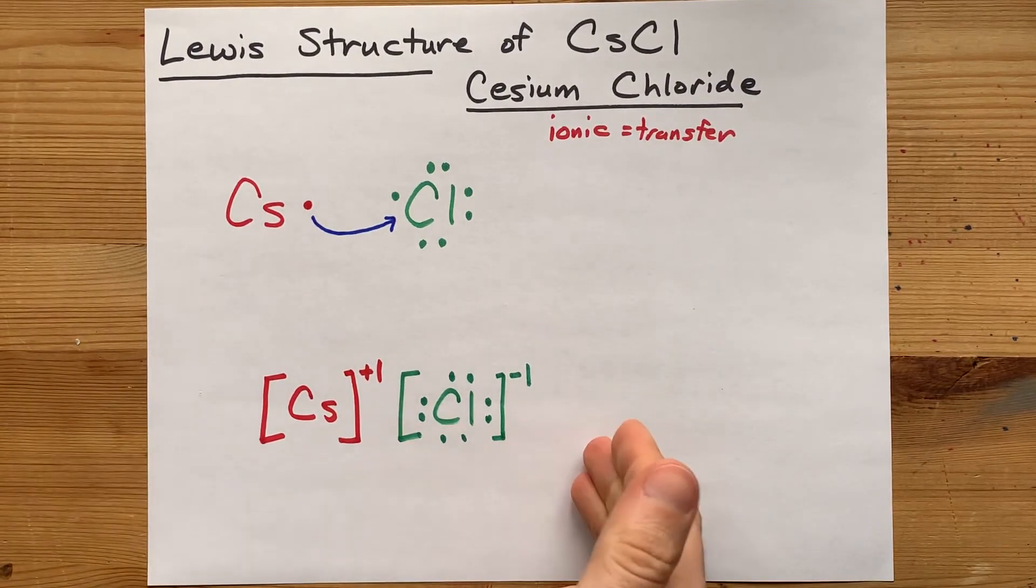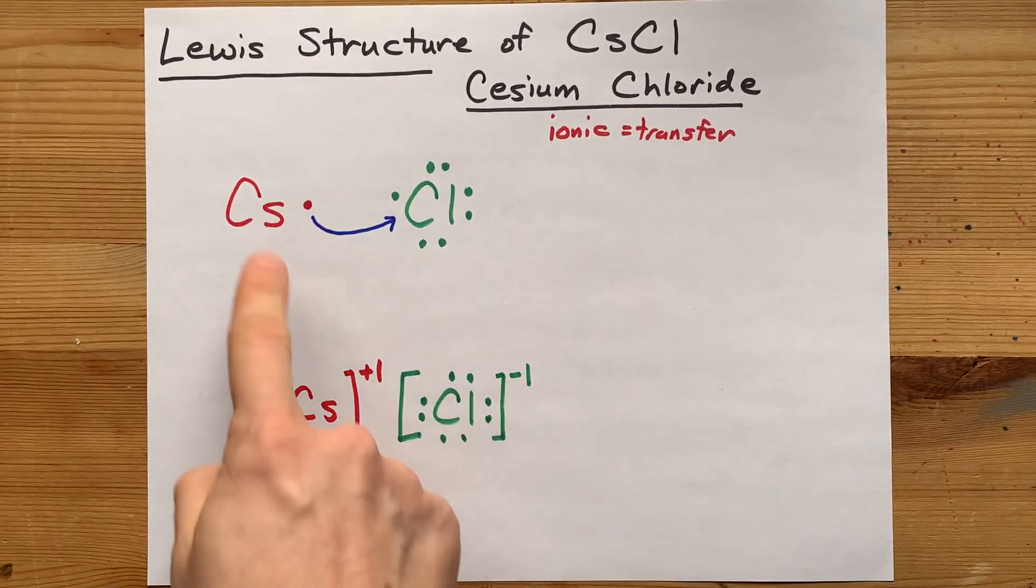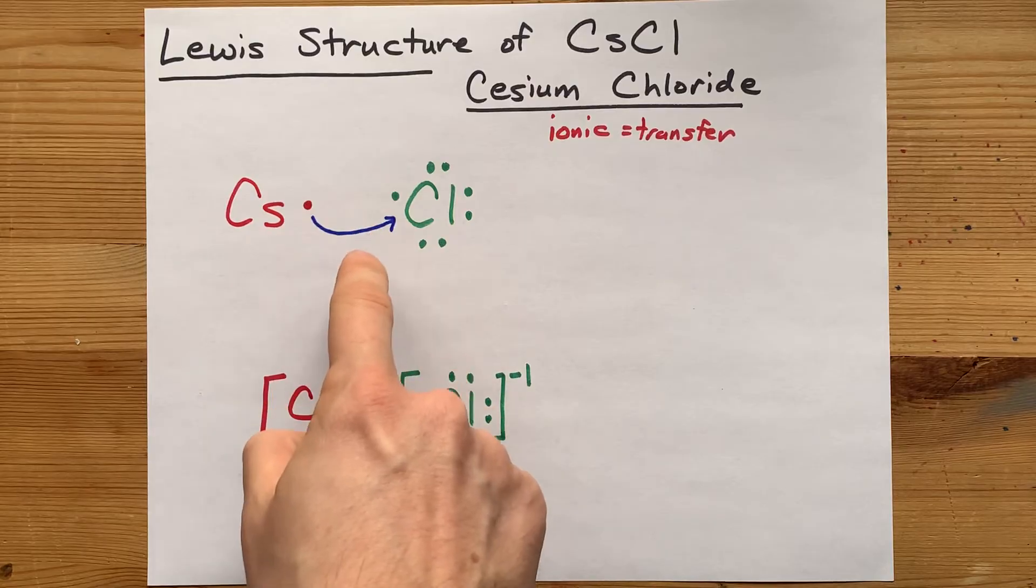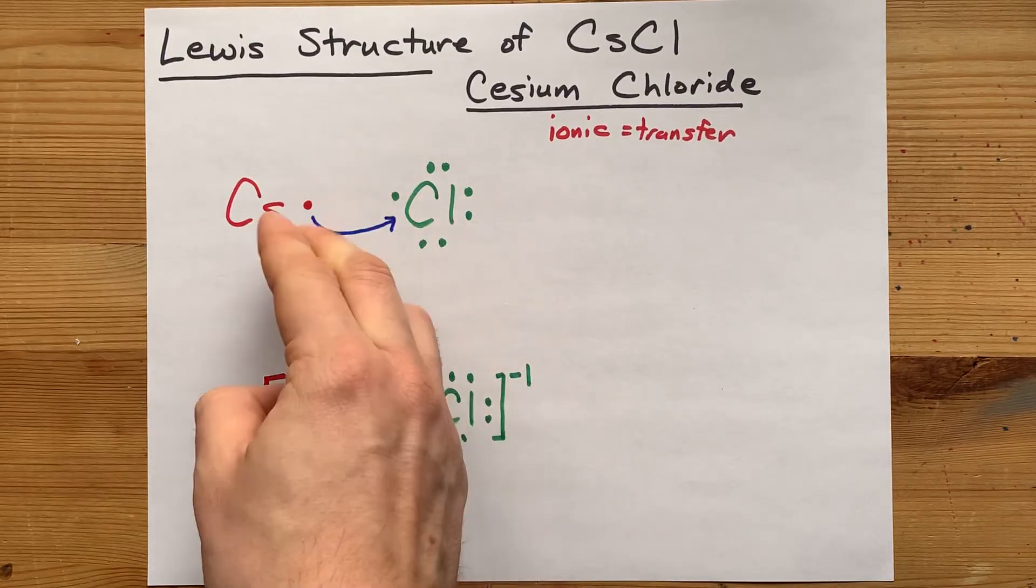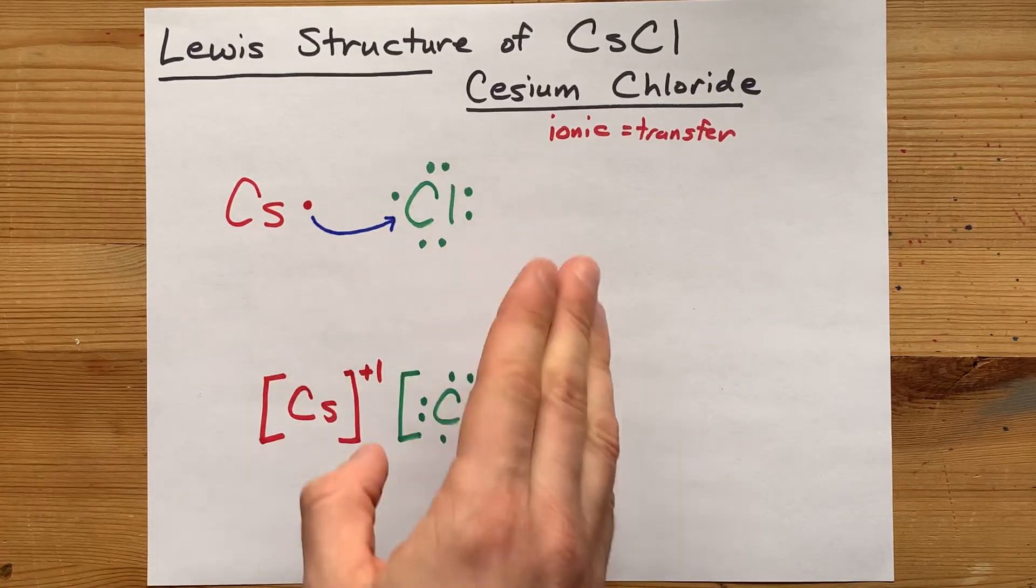Lewis structure for cesium chloride. It was pretty straightforward once you understood that metals give away their electrons and non-metals take those electrons, wanting eight in their outer shell.